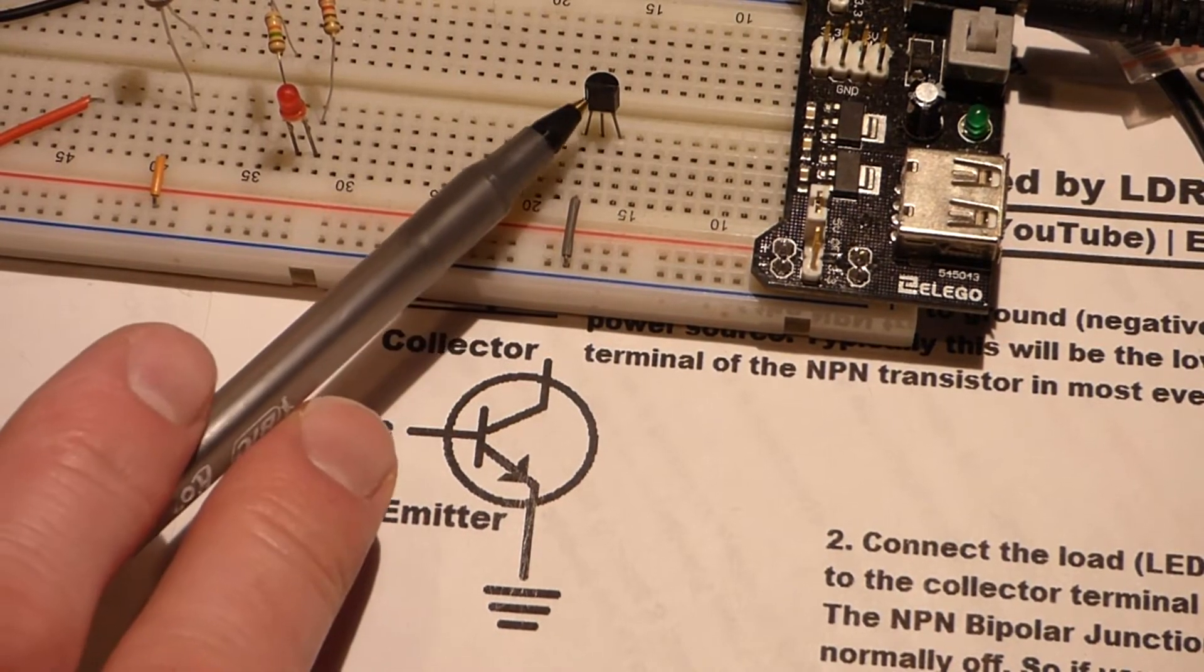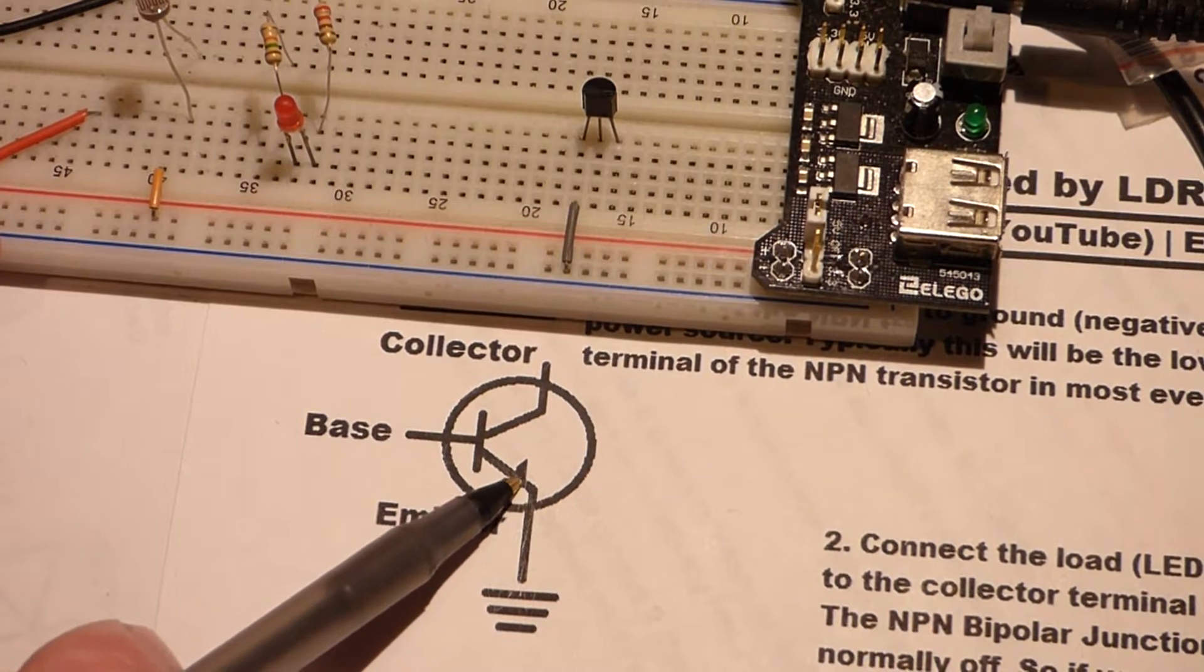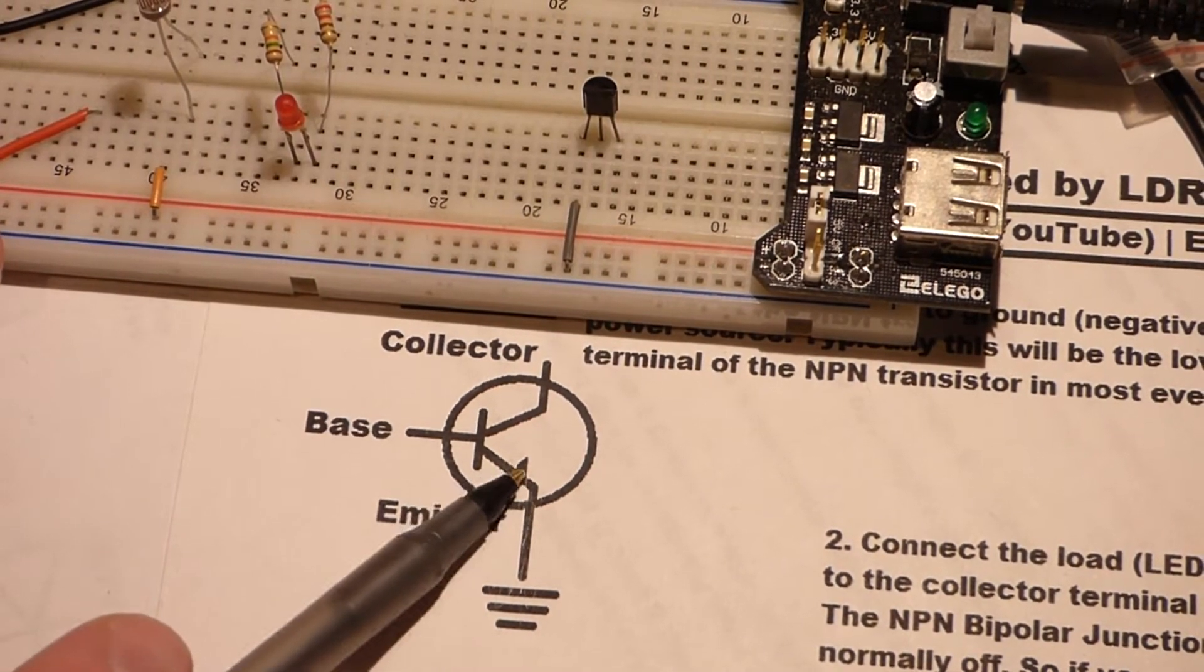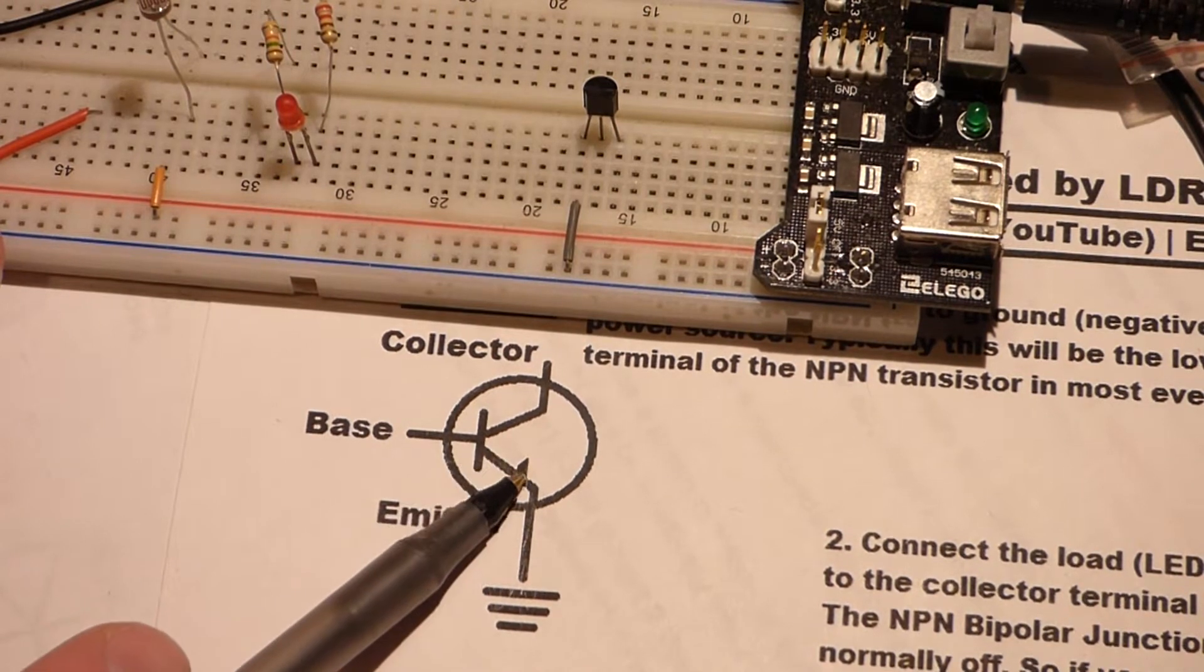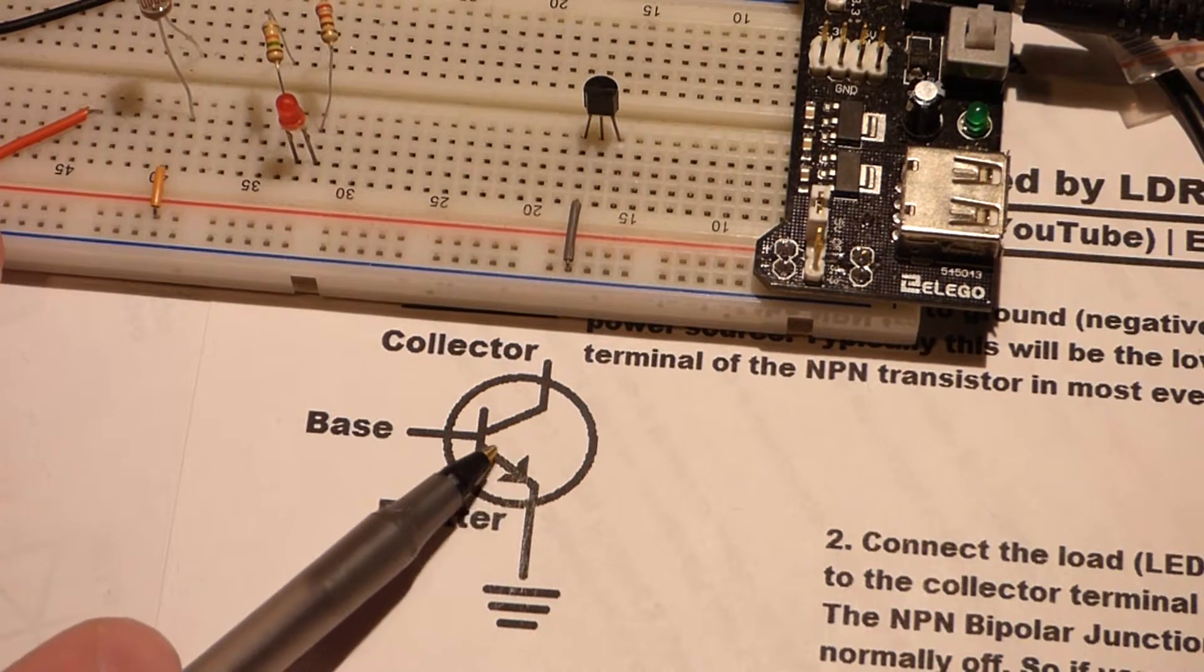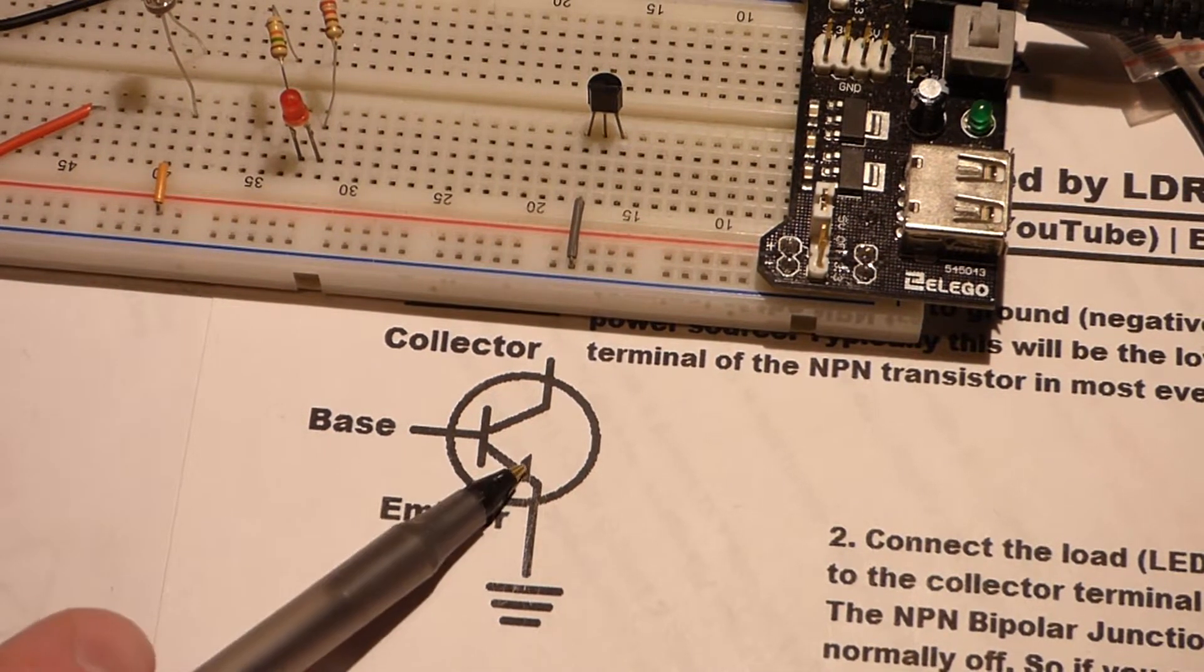So the transistor here is a bipolar junction transistor, the NPN type. There's NPN and PNP. You can tell which one you need in a schematic diagram by which way the arrow is going. So I have the arrow pointing out, not pointing in. NPN. That's one way to remember that.